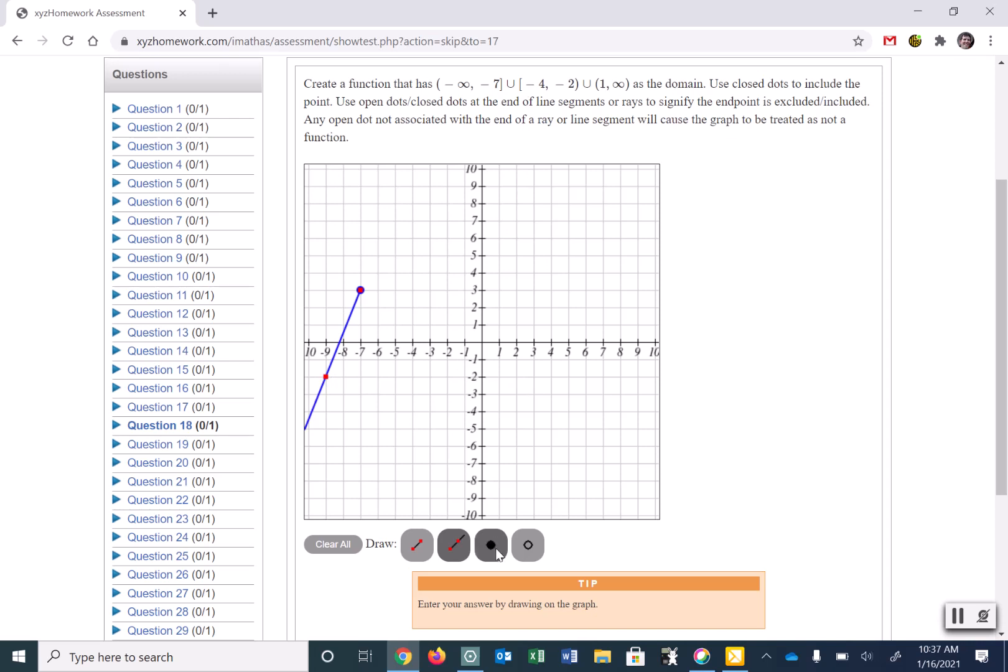The next set is from negative 4 on the x, which is included, and I can pick any y value as long as I'm on the x value of negative 4. And negative 2 on the x - and again, I can choose any y value that I want as long as I have the x value of negative 2. Now notice I did a closed circle for the bracket, open circle for the parentheses.